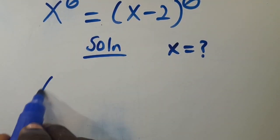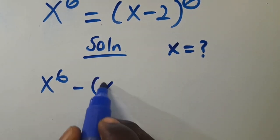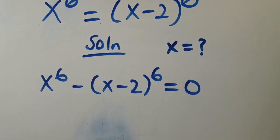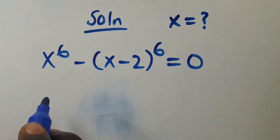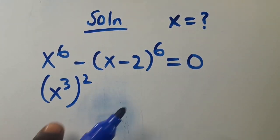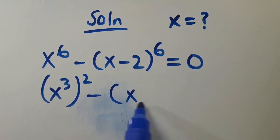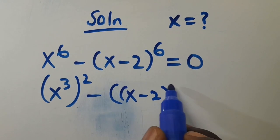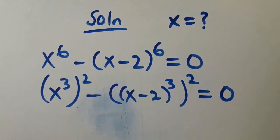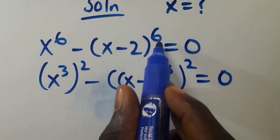From here we have x to the power of 6, let's take this one to this side to be minus open bracket x minus 2, close bracket to the power of 6, then we set everything equal to 0. Let's rewrite the power of 6 as x to the power of 3, to the power of 2, since 3 times 2 gives us back 6, minus x minus 2 to the power of 3, to the power of 2, equal to 0.